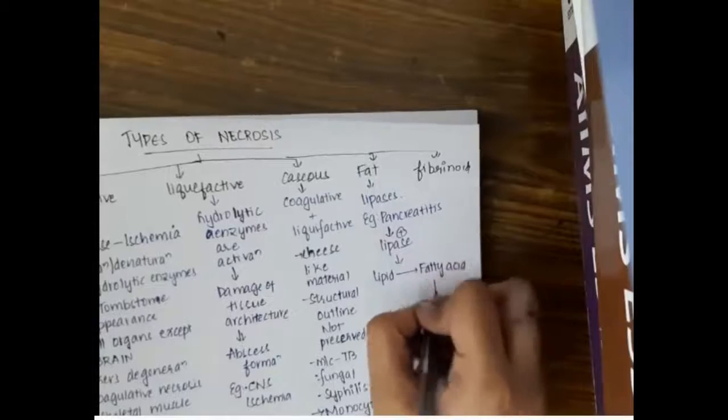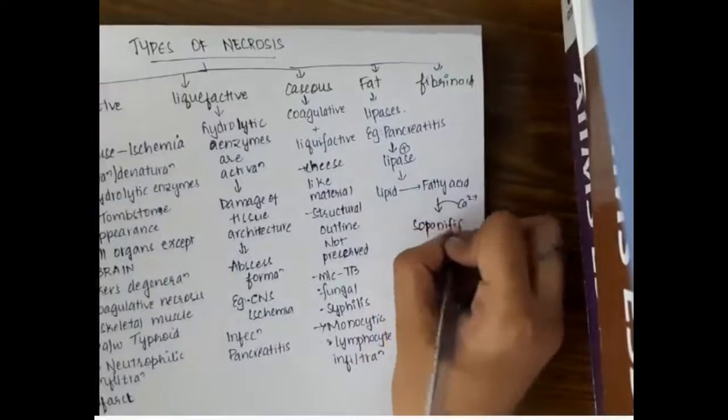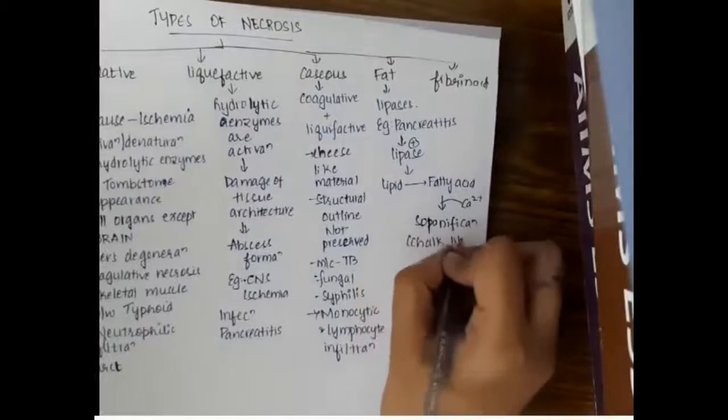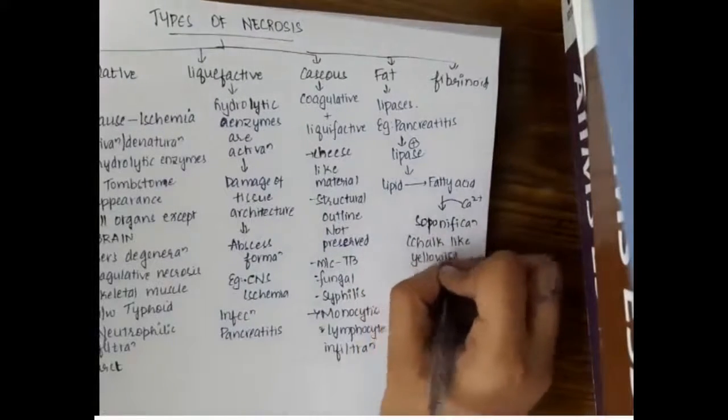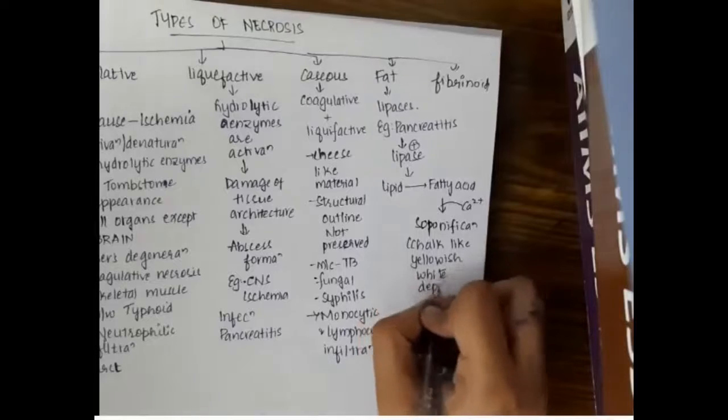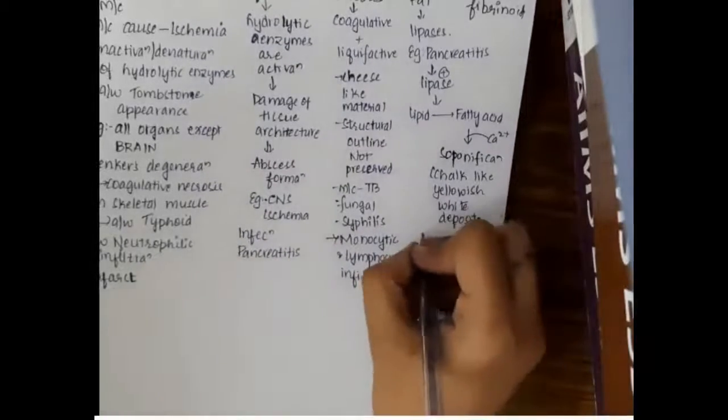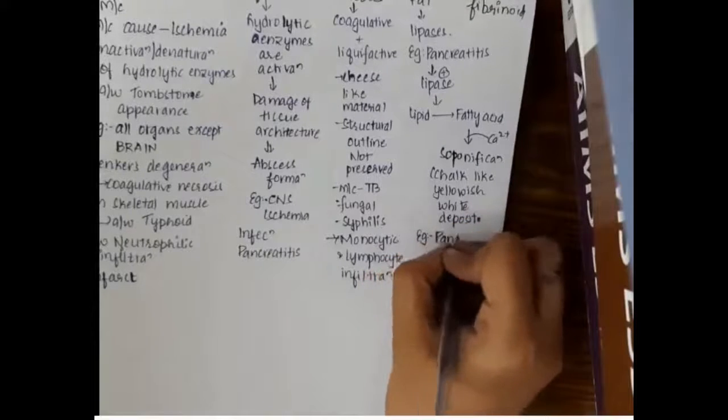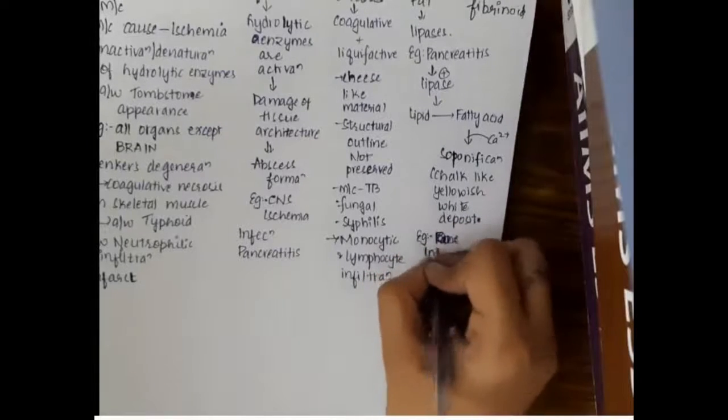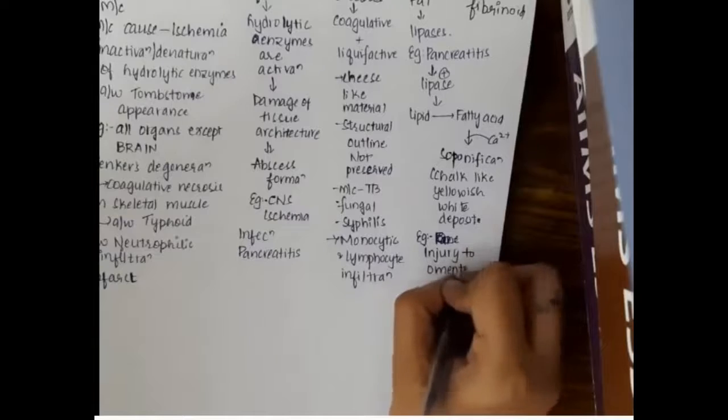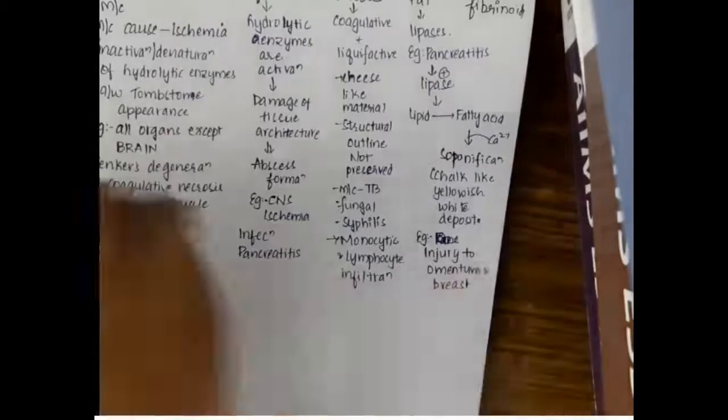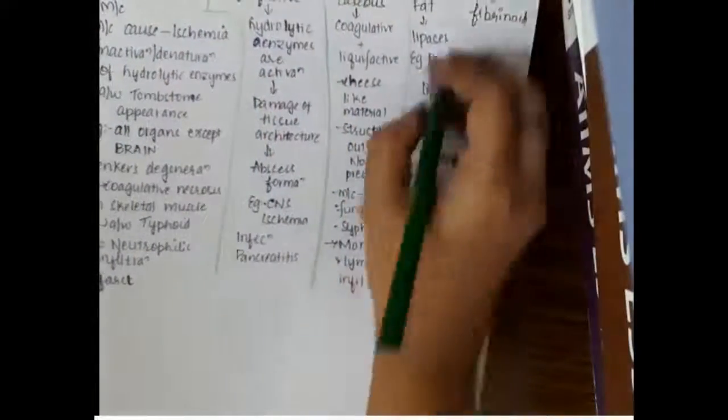This fatty acid combines with calcium to form saponification, which is a chalk-like yellowish white deposit. Examples of this fat necrosis include injury to omentum and breast.